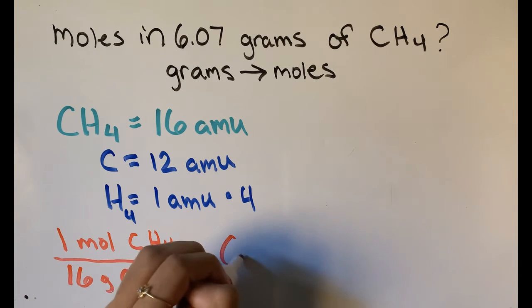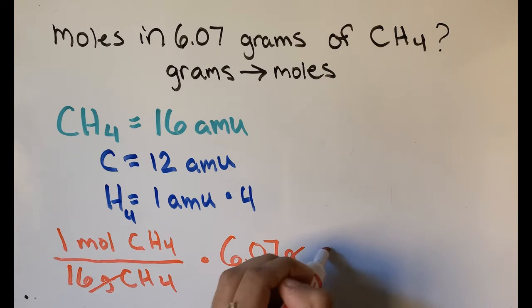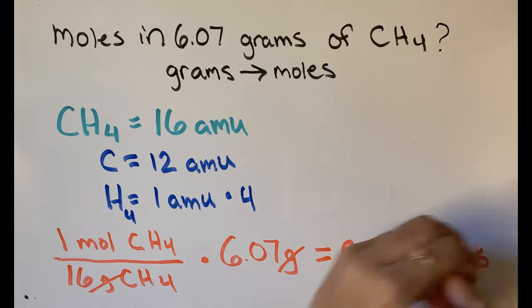Then we multiply that by the amount we have, 6.07 grams. This will cause the grams to cancel out, and we're left with the moles, which is 0.379 moles.